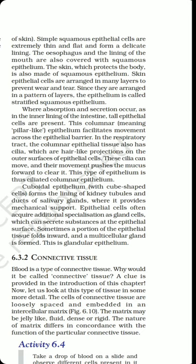Columnar epithelial cells are present in regions of the body where extensive absorption and secretion occurs, such as the inner lining of the intestine. These are tall epithelial cells that give a pillar-like appearance — columnar means column or pillar shaped, so these cells look like pillars.